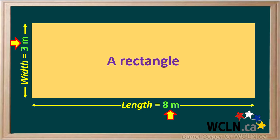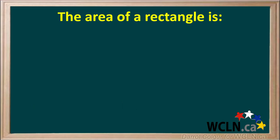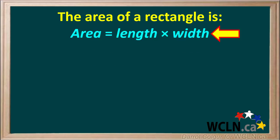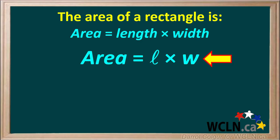We'll start with a rectangle that is 8 meters long and 3 meters wide. It is known that the area of a rectangle is its length times its width. So for a rectangle we can use the formula area equals L times W, where L is the length and W is the width.